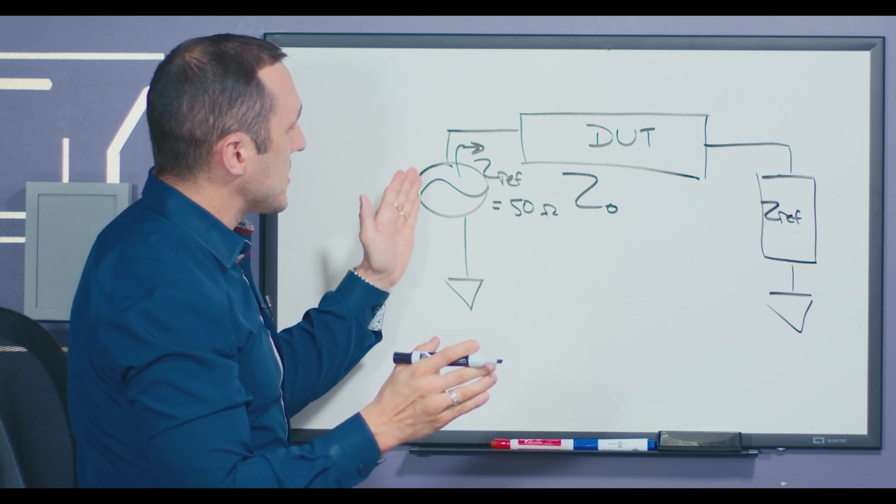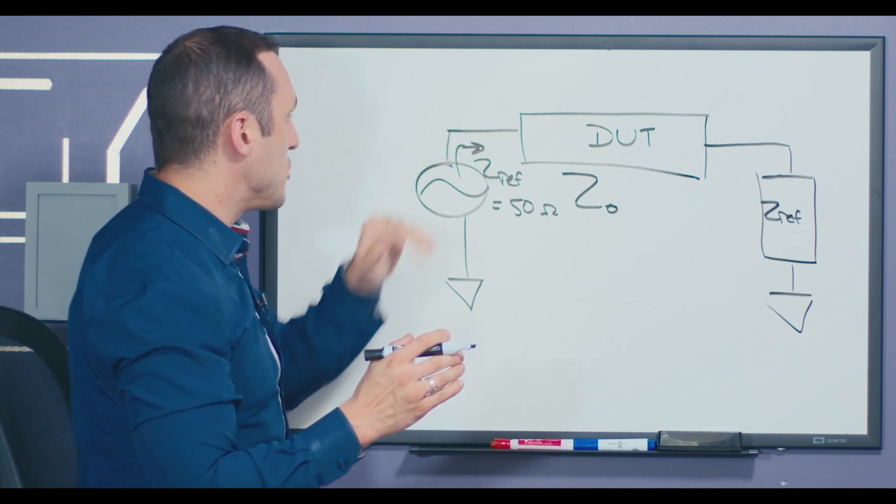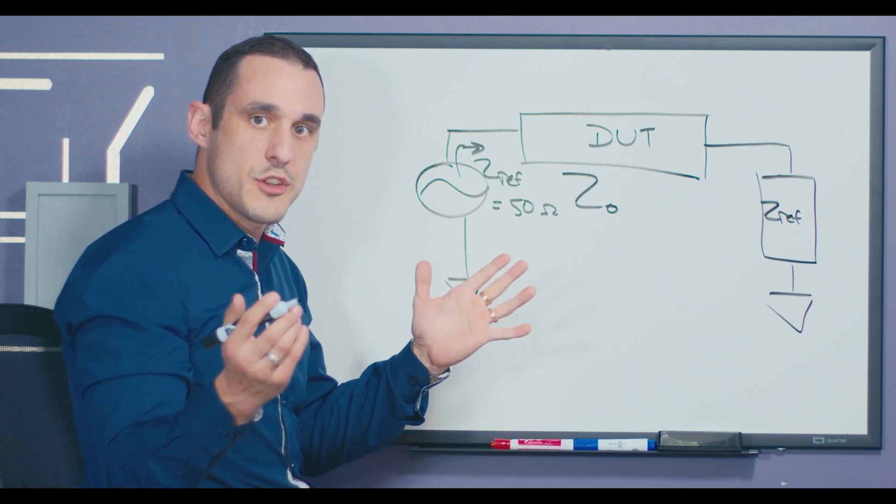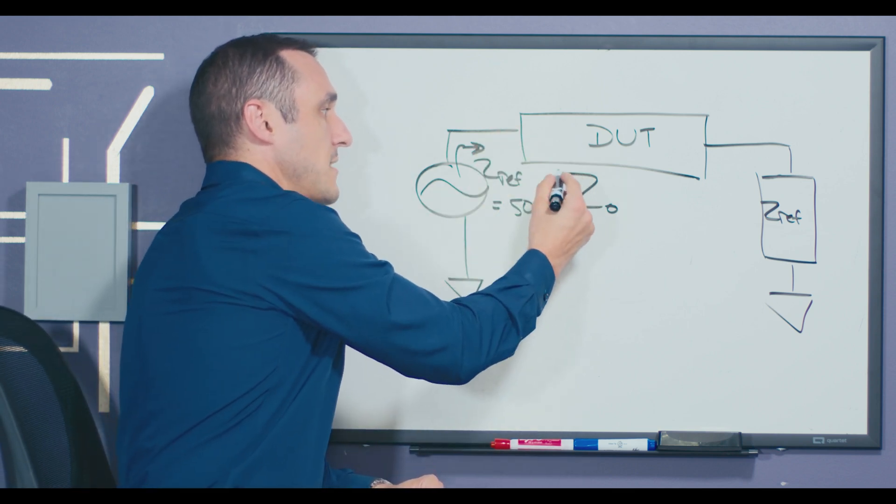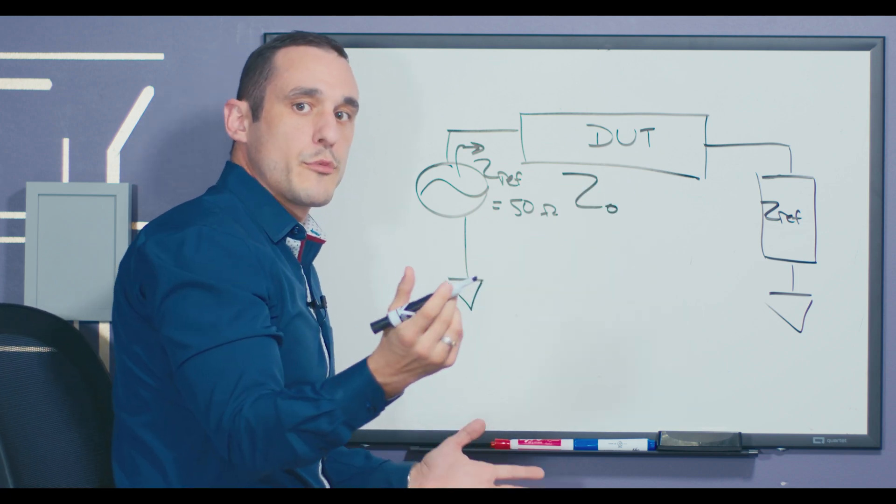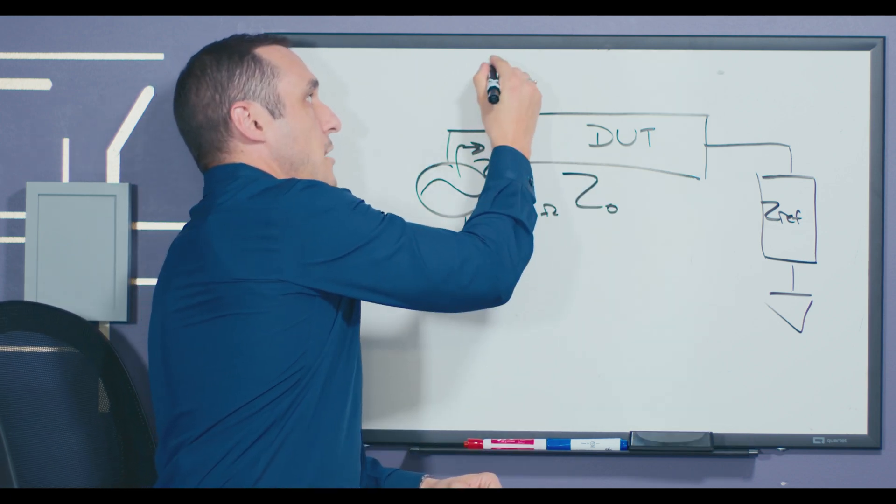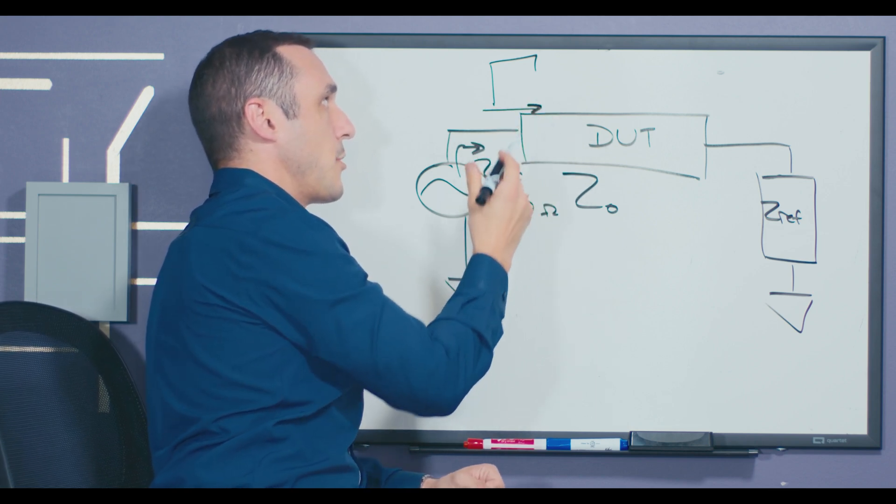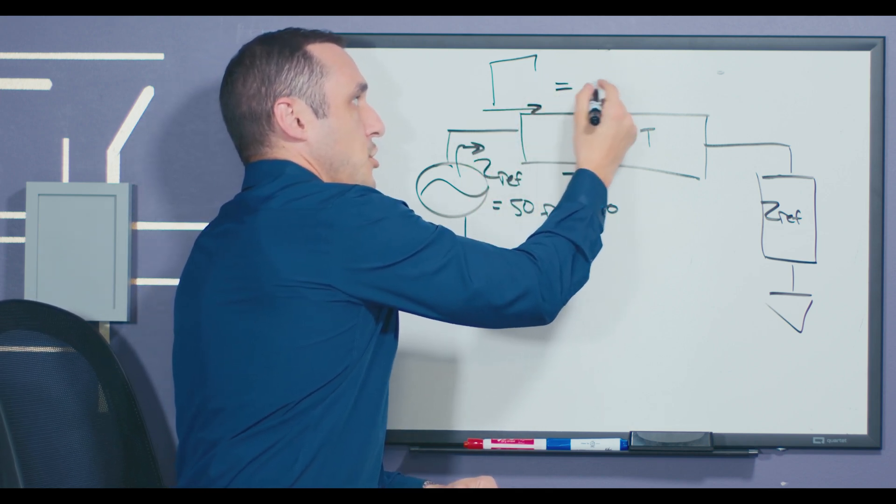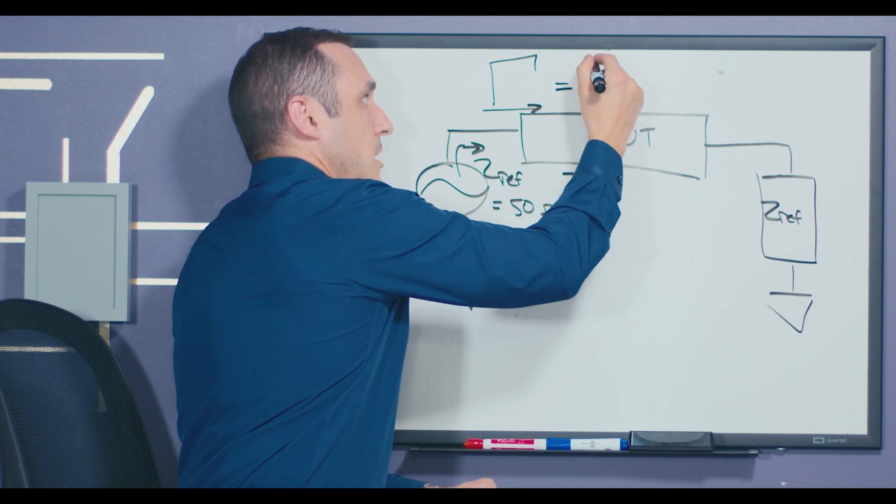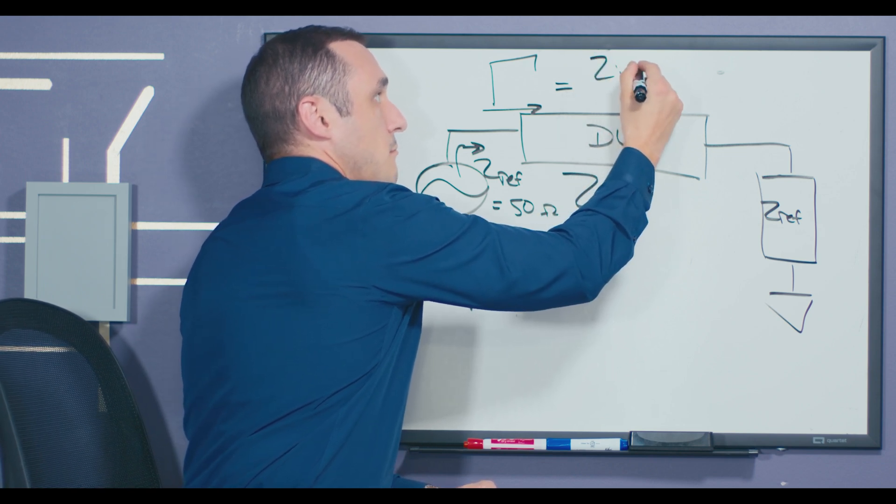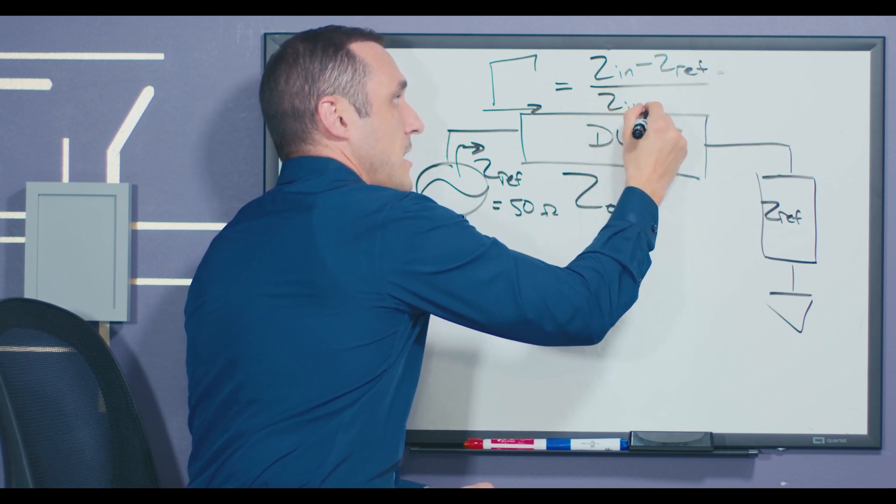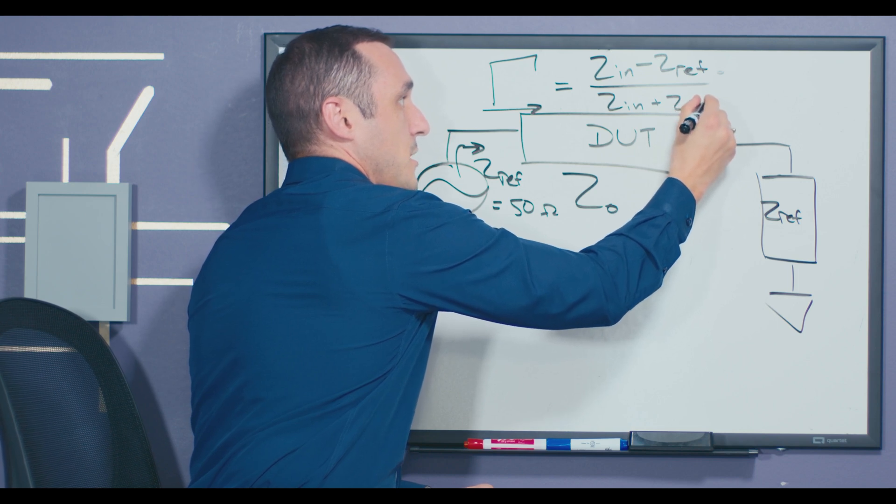When we send in the signal from port one going into the device under test via the reference impedance, what do we expect to measure? Well, remember here that Z sub zero can vary over frequency. So here there is a reflection coefficient looking into this portion of the topology, and this reflection coefficient is equal to the input impedance minus the reference impedance divided by Z in plus the reference impedance.